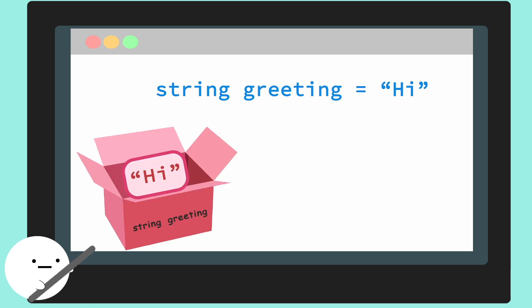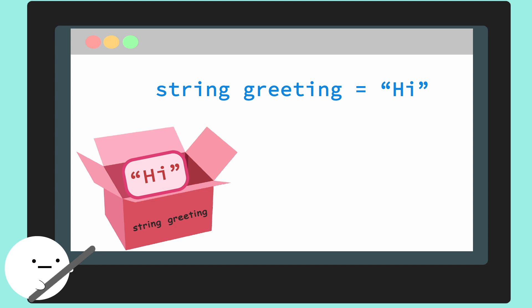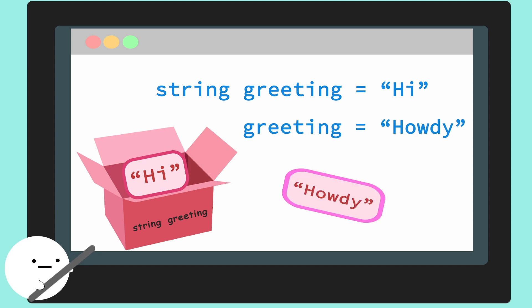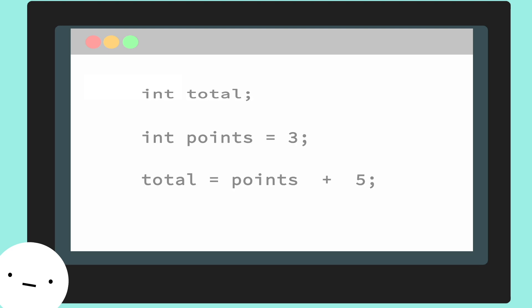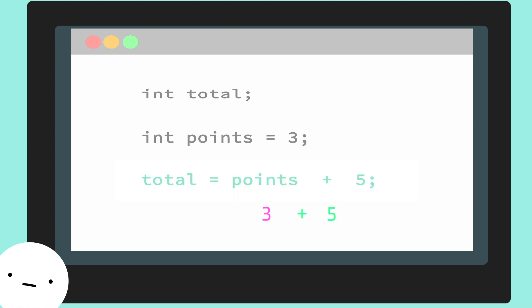Here's a similar example, but with words. We have a variable named greeting, and it holds the word 'hi'. Then we can replace that greeting with the word 'howdy'. Here's a more complex example with two variables. We have a variable named total that's been declared without a value, and we have a variable named points with a value of 3. Now we want to assign total a new value of our points variable plus 5. So total is basically 3 plus 5, and now our variable total has a new value of 8.